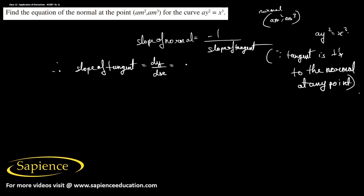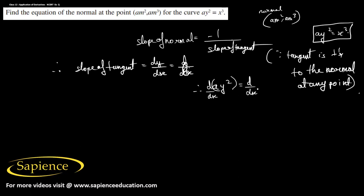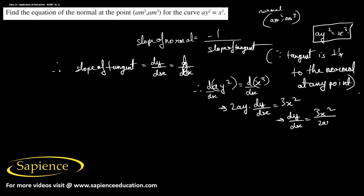We take the derivative of ay² = x³ with respect to x on both sides. This gives us 2ay · (dy/dx) = 3x². Therefore, dy/dx = 3x² / (2ay).